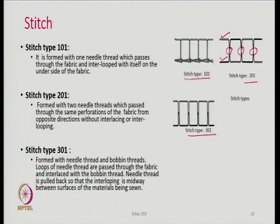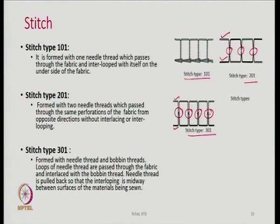Stitch type 301 uses two different threads but the difference is there is interlooping here. It is formed with needle thread and bobbin thread — loops of needle thread are passed through the fabric and interlaced with the bobbin thread. The needle thread is pulled back so that the interlooping is midway — the ideal placement of the loop is at the middle. If there is variation in tension either in the bobbin thread or needle thread, the placement of this loop may go towards the surface or towards the bottom of the fabric.